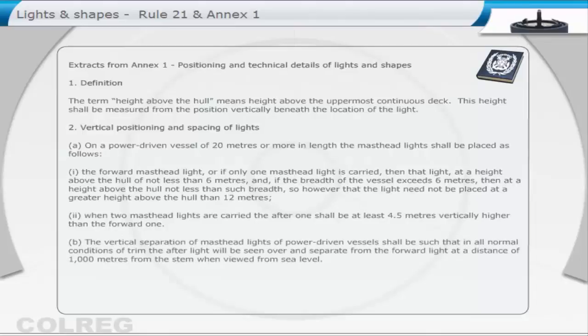The vertical separation of masthead lights of power-driven vessels shall be such that, in all normal conditions of trim, the after light will be seen over and separate from the forward light, at a distance of 1,000 metres from the stem when viewed from sea level.